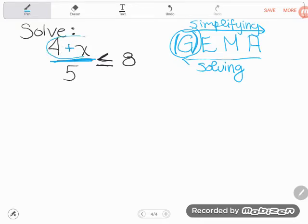So basically, four plus x is a grouping. And so I'm going to leave groups for last. I'm going to get rid of this five first.